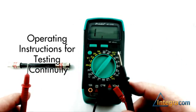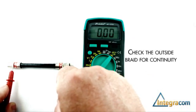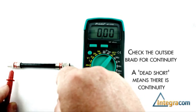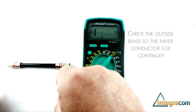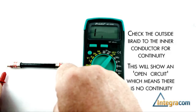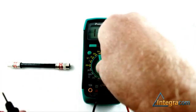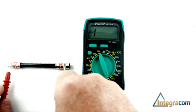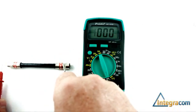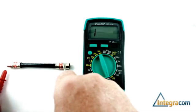We can check continuity of the outside braiding. That shows a dead short, meaning we have continuity. We can check the outside braiding for continuity to the inside conductor, and that reading is showing open circuit. By selecting the speaker, we can do the check audibly. Dead short means continuity; no sound means no continuity.